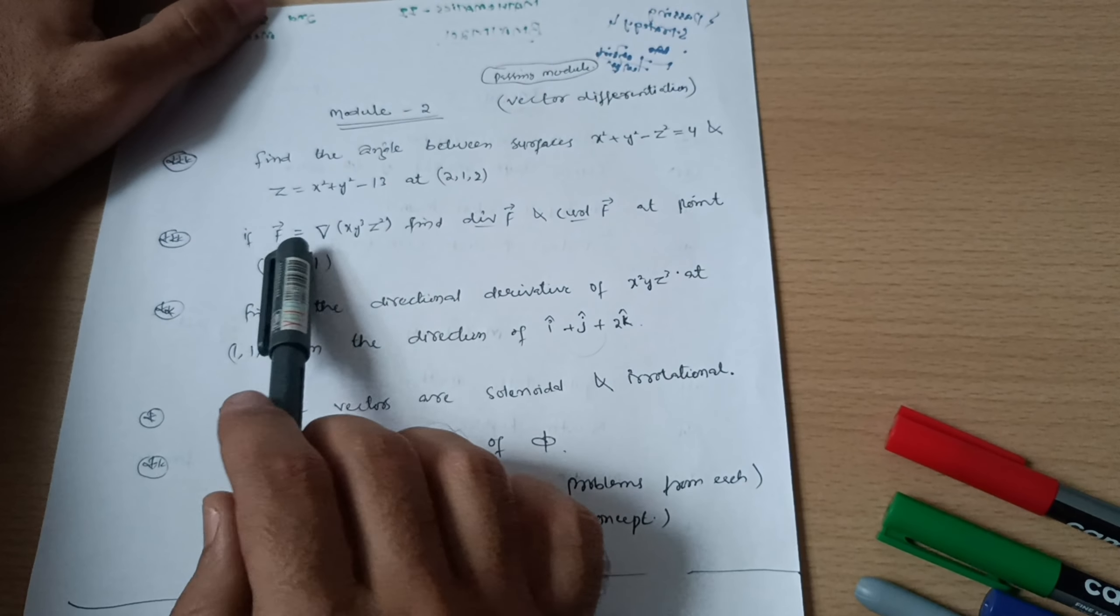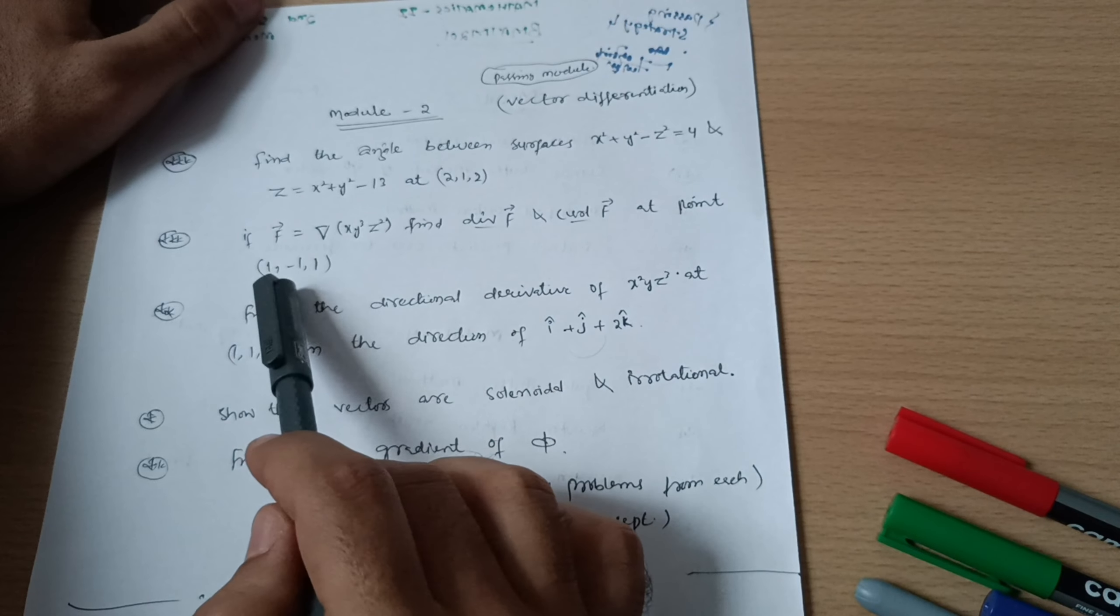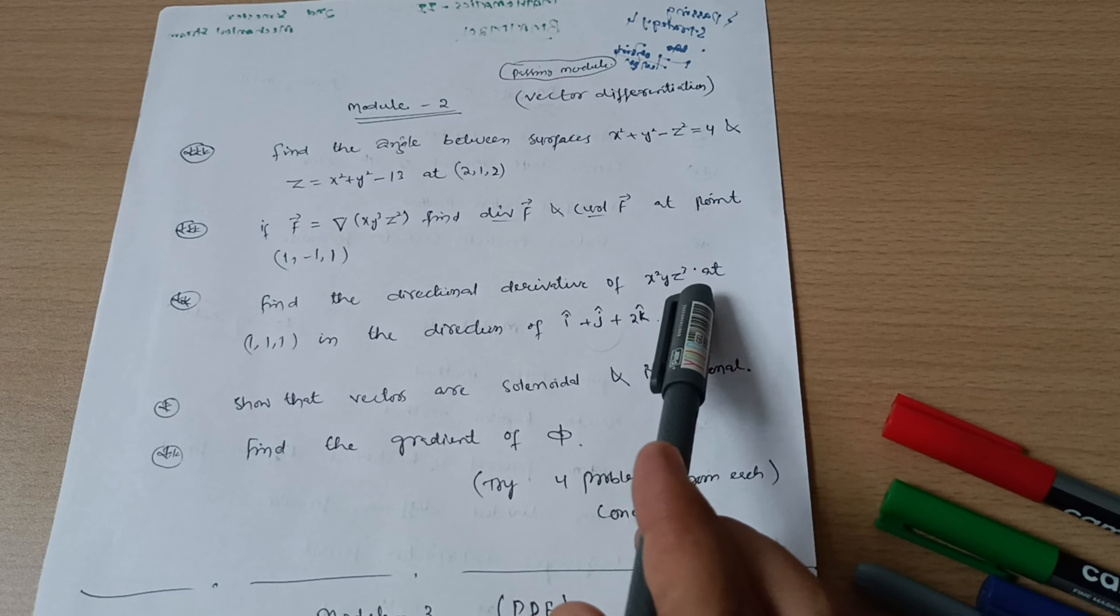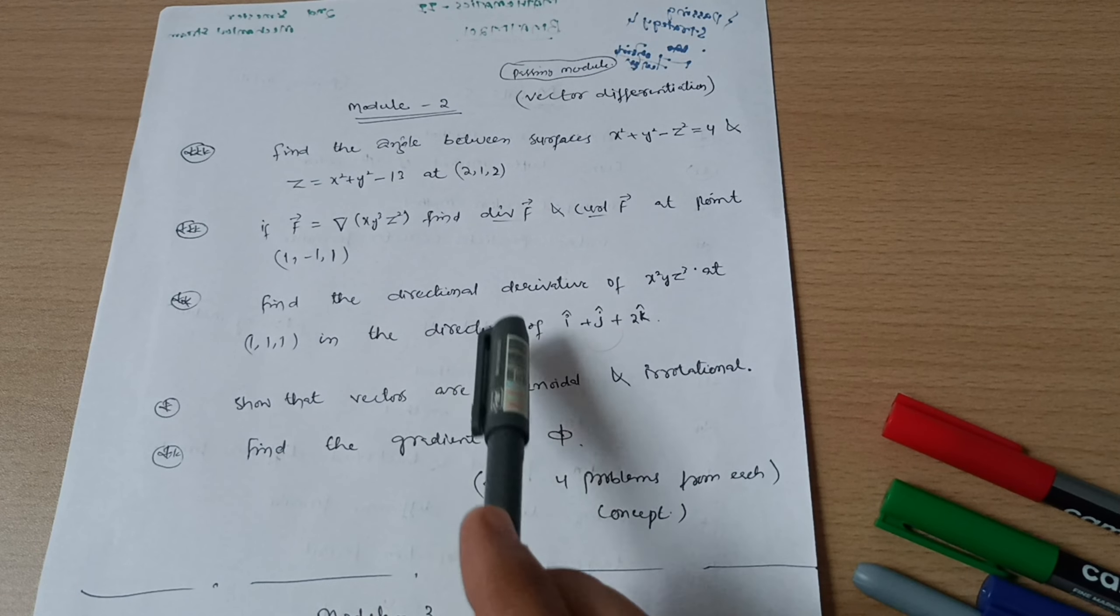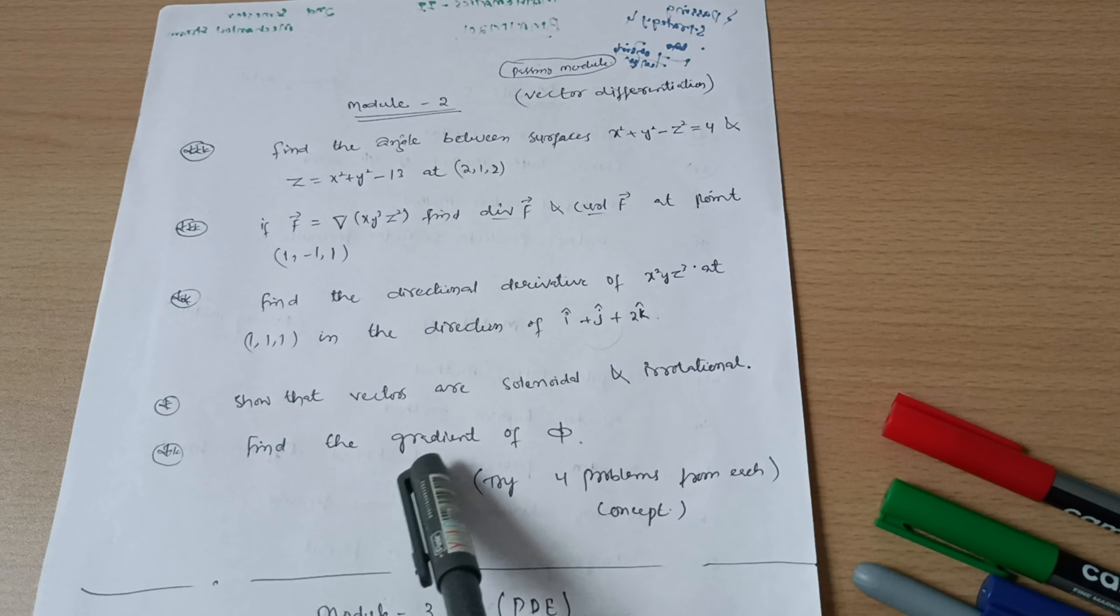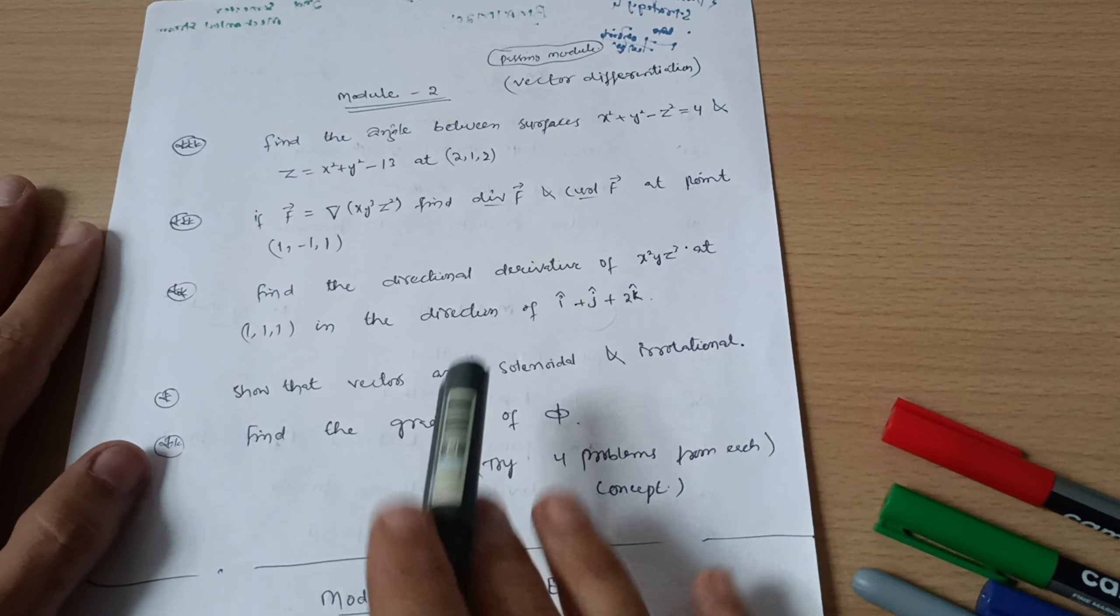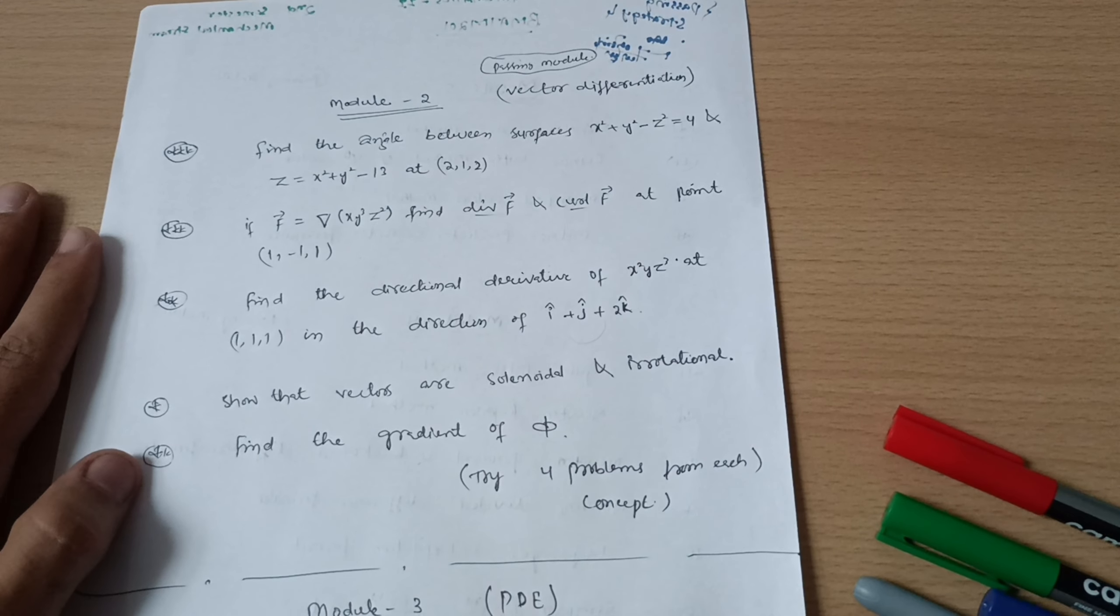I will upload the solved model question paper, so wait for it. Next: if f equals grad of xy cubed z squared, find divergence of f and curl of f at point (1, -1, 1). Find the directional derivative of x square yz cubed at (1, 1, 1) in the direction of i cap plus j cap plus 2k cap. Show that vectors are solenoidal and irrotational, find the gradient of phi. Try four problems from each concept to get at least 15 marks from this module, possibly 20 marks if you have depth in differentiation.